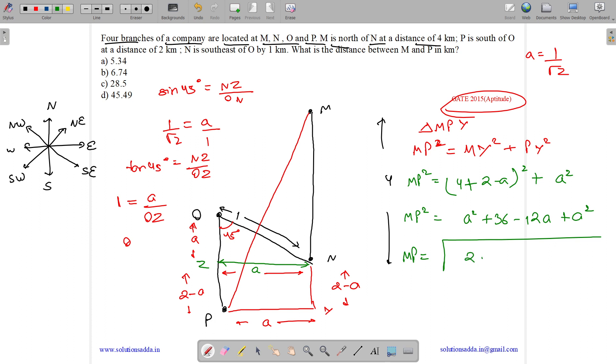So what is the value of MP? MP equals to under root of 2A square minus 12A plus 36. Now applying the value of A we get 2A square is 1 by 2 minus 12 by root 2 plus 36. So MP equals to under root of 37 minus 6 root 2. So if you solve this you will get 37 minus 6 into root 2 which is 1.414. So you will get it equals to 5.34. So answer is option A 5.34.